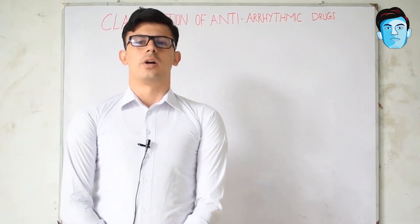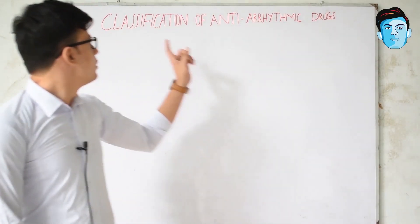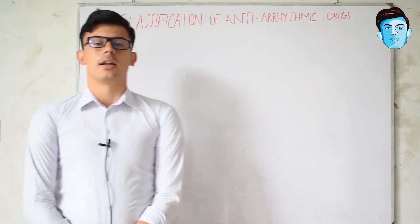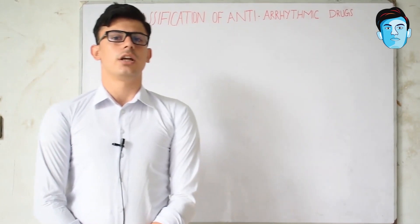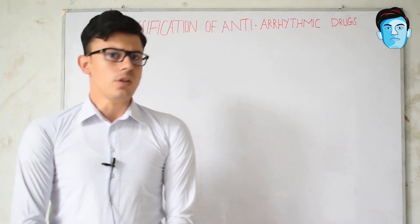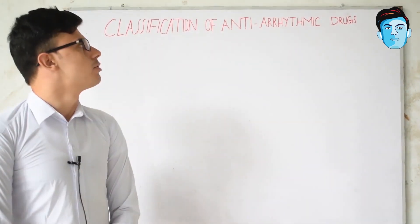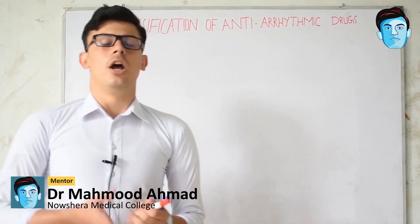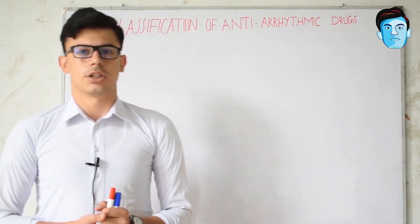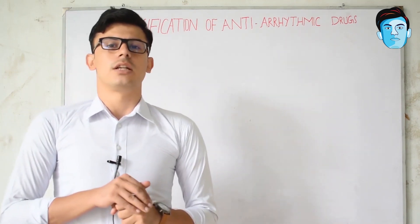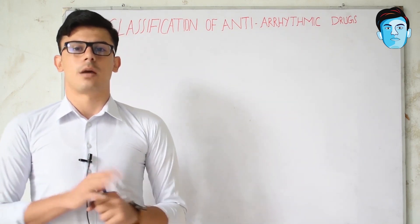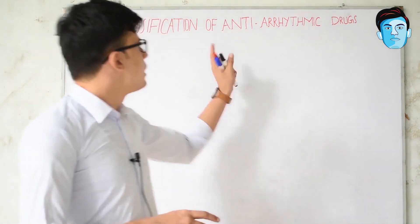Assalamu alaikum doctors. Today our topic of discussion is the classification of anti-arrhythmic drugs. In this lecture we are focusing on the classification with a basic trick so that you can easily recall it. Anti-arrhythmic drugs are drugs that restore the normal heart rhythm. This classification is also called the Vaughan Williams classification, because Vaughan Williams was the first scientist who classified it in a more systemic format.